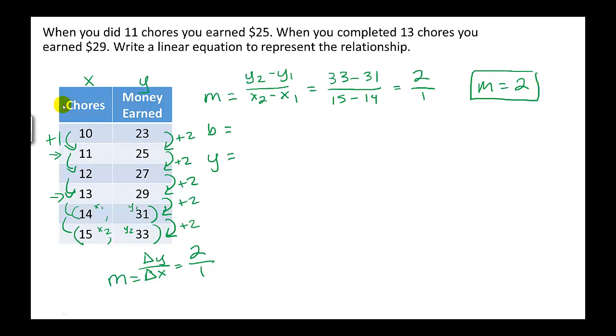Because we're not given an x of 0 we don't know what y is at that point so to find our b, our y intercept we're going to pick a point and plug it in to y equals mx plus b with our slope of 2 so we can work with our first point it doesn't matter which one we use. So we have x and y, y is going to be 23 equals our slope of 2 x is 10 plus b.